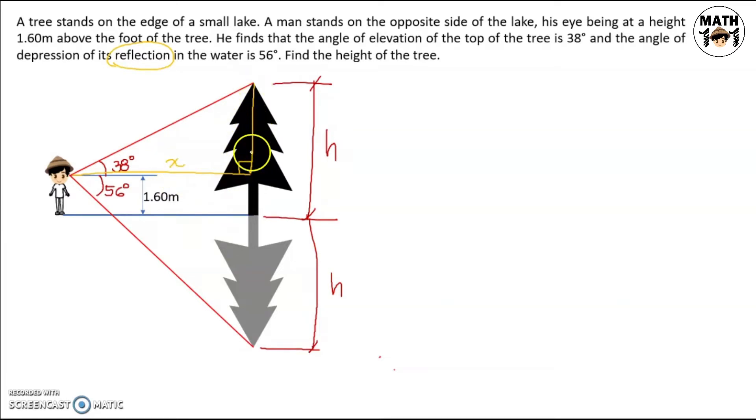And what is this height equal to? If the total height of the tree is h, and this distance is 1.6, therefore this distance is equal to h minus 1.6. The next triangle we can form is this one. Now what is this height? If this is h and this is 1.6, the total height for this is h plus 1.6, and the horizontal distance is the same x.